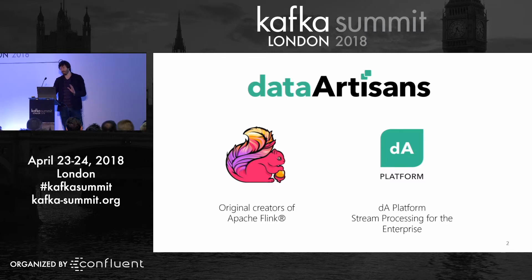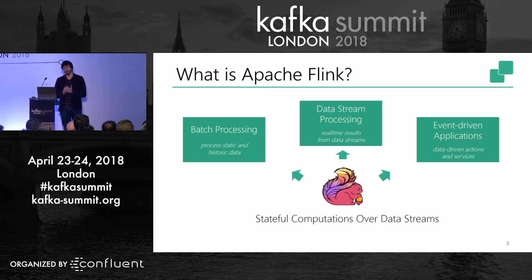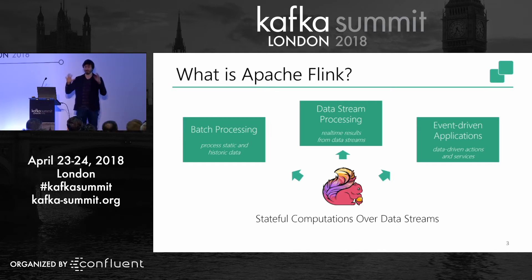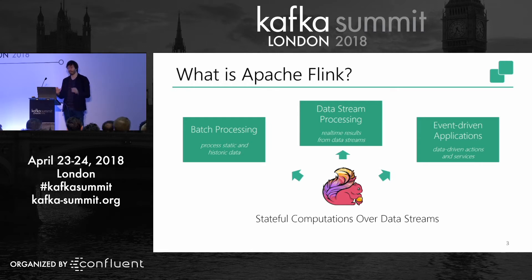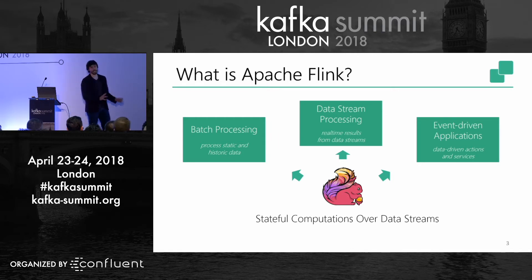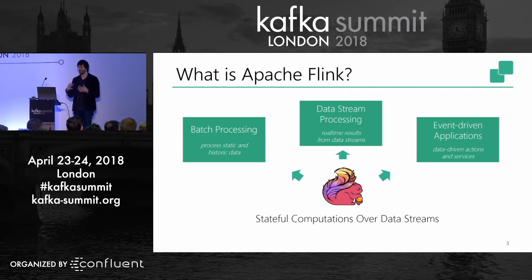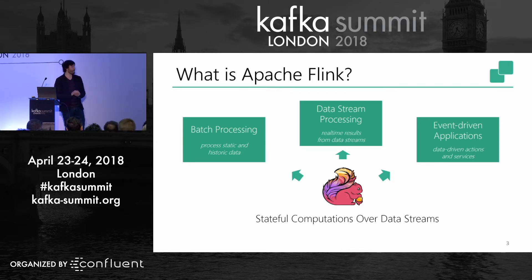I'm going to do a very brief introduction to Flink. I hope most of you have actually heard of it before, or at least roughly know where to place it. From a very high level, Apache Flink is a system for stateful computation over data streams. It's not a system to store data streams — unlike Kafka, which is the log that stores events — it's a system to compute over streams of events.